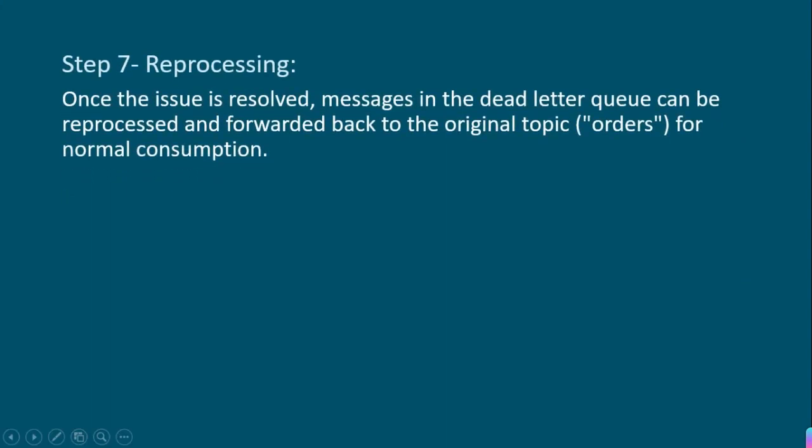After that, reprocessing will happen. Once the issue has been fixed, messages which were in the dead letter queue will be pushed back to the original orders topic for normal consumption, so that the consumer can again read that message and update the inventory or send notifications to the customer. So this is all about the dead letter queue in seven steps. If you liked the video, please do subscribe to the channel. Thank you.